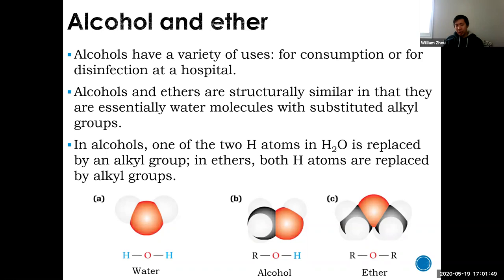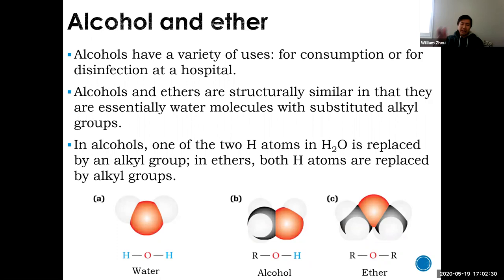Alcohols and ethers are structurally similar to water. Water is H₂O — oxygen with two hydrogens. If you substitute one hydrogen for a carbon chain, you get an alcohol: an OH group attached to a carbon chain. If you substitute both hydrogens for carbon chains, you get an ether — oxygen bonded to two different carbon chains, essentially a long carbon chain cut in two by an oxygen in the middle.